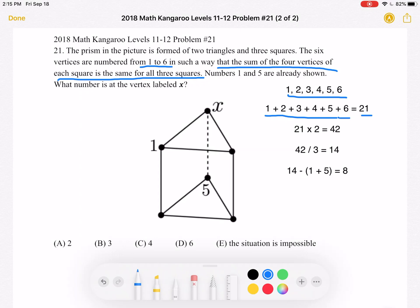Now, let's try to figure out what the sum of the vertices on each of the three squares is equal to. Because again, we know that the sum for each square is the same for all three squares.